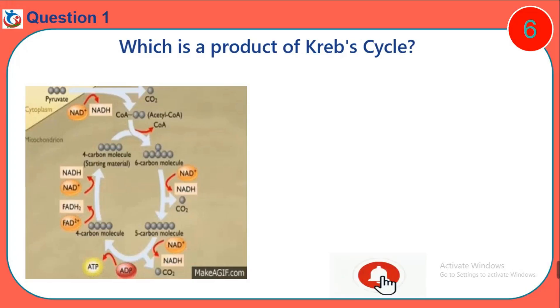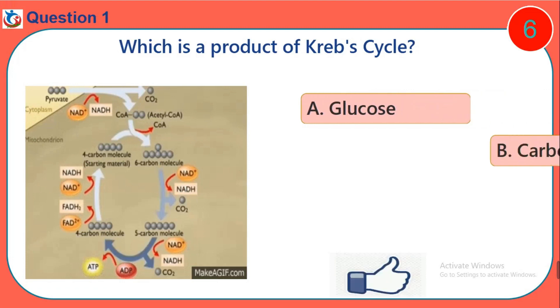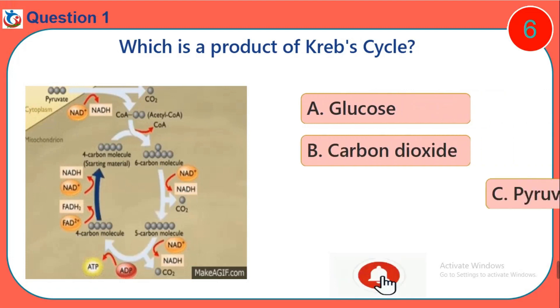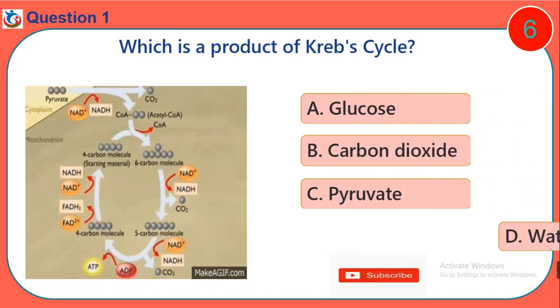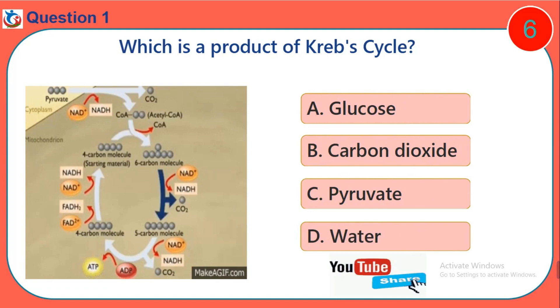Question 1. Which is a product of the Krebs cycle? A. Glucose. B. Carbon dioxide. C. Pyruvate. D. Water.